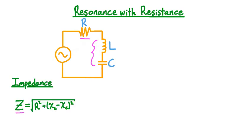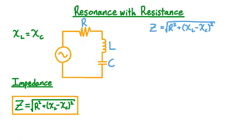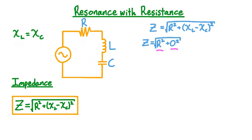The size of the impedance is the square root of the sum of the squares of the resistance and the total reactance. We have to use this special combination because reactive components change the phase between EMF and current, but resistive components don't. On resonance, the inductive and capacitive reactances are equal, so the total reactance is zero. Therefore, the impedance on resonance is the square root of R squared plus zero, which is just R. So on resonance, the impedance of the circuit is identically the resistance.